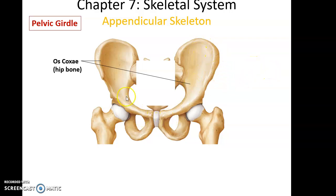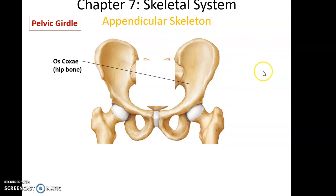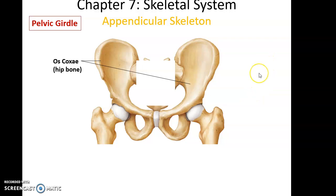To start with, the pelvic girdle is the structure that attaches the lower limbs to the axial skeleton. The pelvic girdle is made up of two bones, collectively known as the os coxae — the right hip bone and left hip bone. That's the term we're going to be using rather than hip bone.